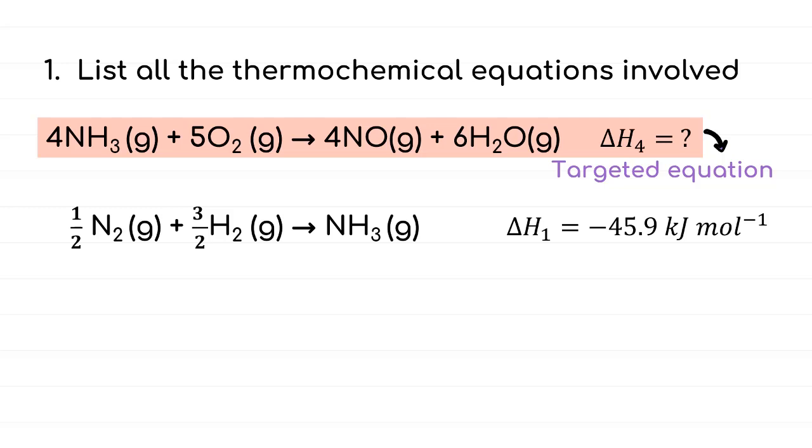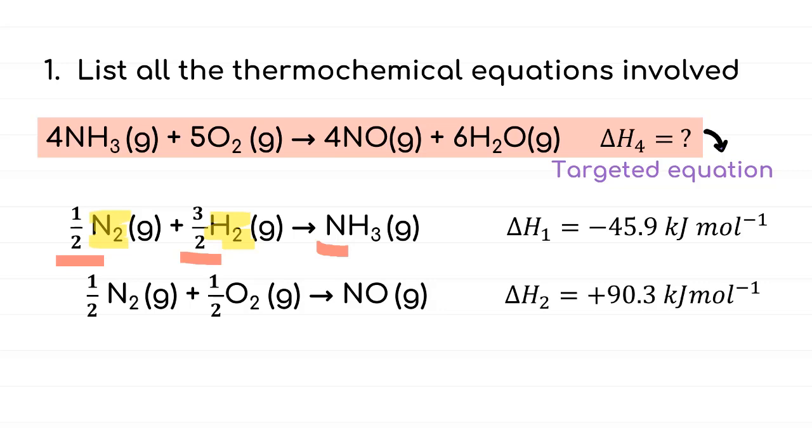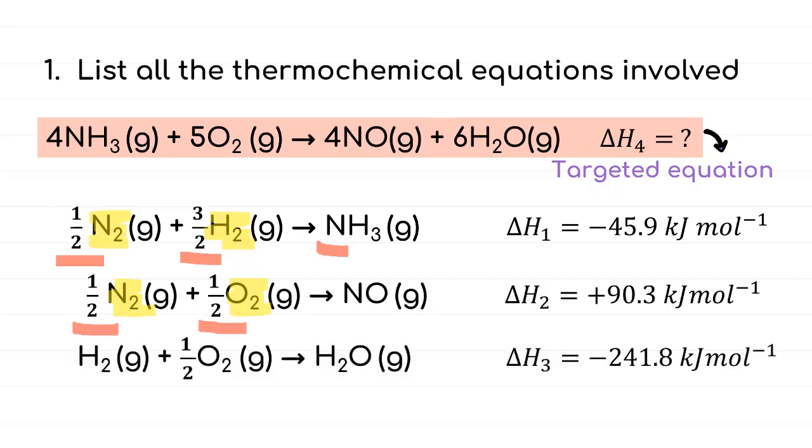Delta H naught for NH3 is negative 45.9 kilojoule per mole means 1 mole of NH3 is formed from its element in their most stable states, where in this case, we have nitrogen as N2 and hydrogen as H2. You keep only 1 mole of NH3 to be formed. Same goes to NO. N is the most stable as N2 while O is the most stable as O2. To get 1 mole of NO, then only half of each N2 and O2 will react. Lastly, is water. Water is made up from H2 and O2. Therefore, 1 mole of H2 and half mole of O2 will react to form 1 mole of H2O.